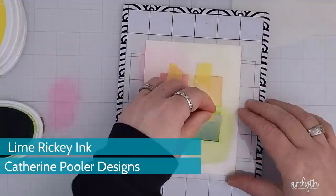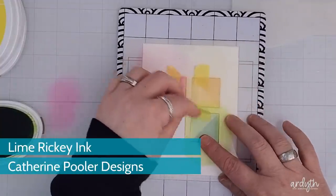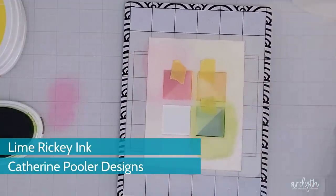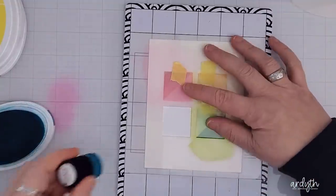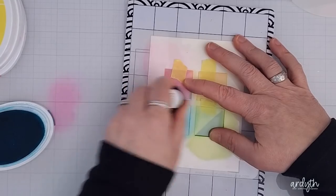I moved on to the bottom right square and lime ricky ink and I did the same two layers again. And I shifted the mask so that the second layer of ink is always on the outside corner. You could do them all the same if you want, but I felt like this gave me a bit of a frame.